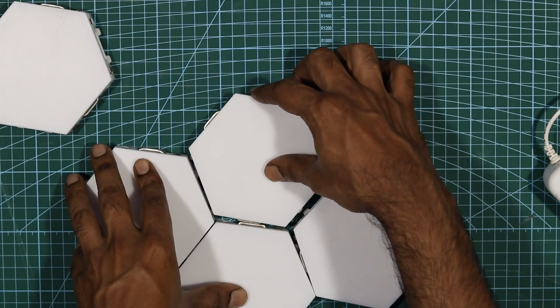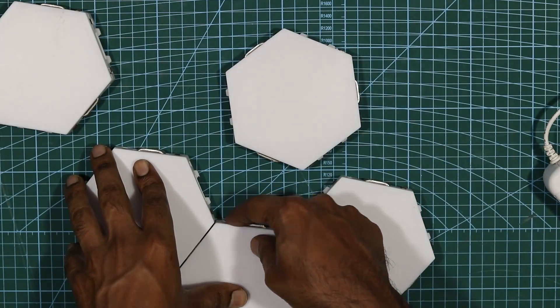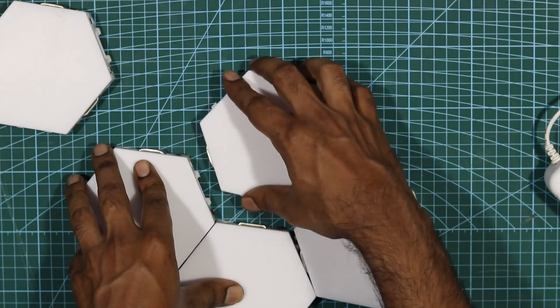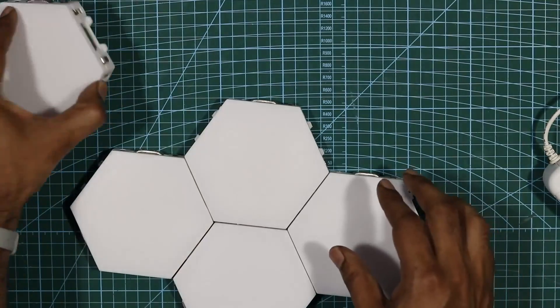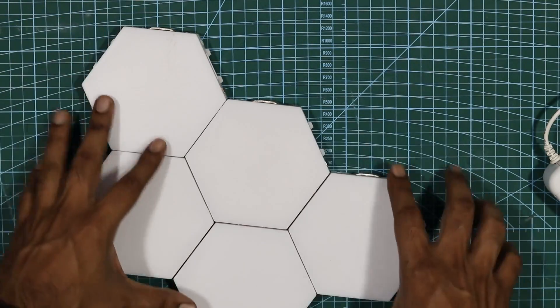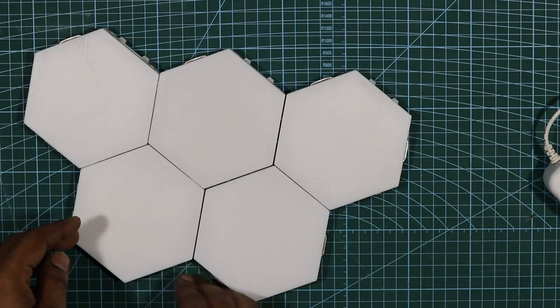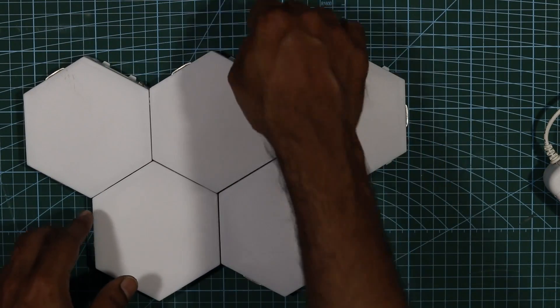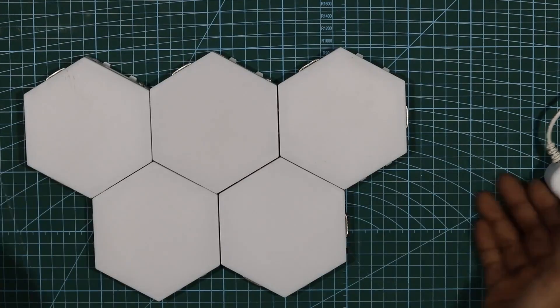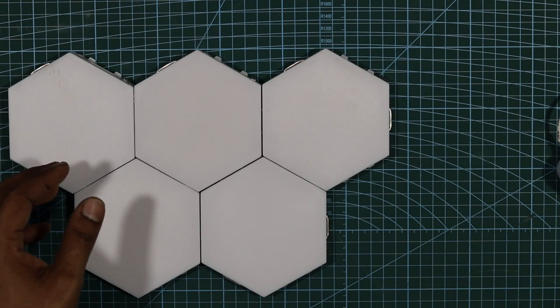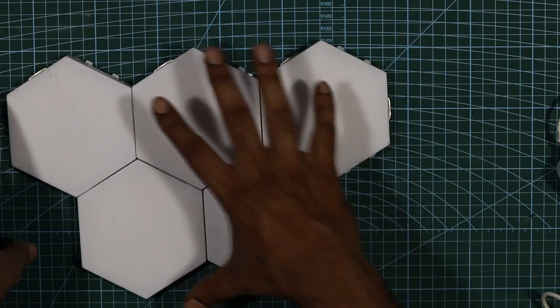Likewise, you can lock all the modules. And if you see on the top, I can't fix it because I'm not able to fix it properly because of the orientation, you have to make sure that you fix it correctly. So this is how it gets connected. You can design in whichever way you want. In this case, I only have five. But if you have like 10 or 11 or 12, you can design it.